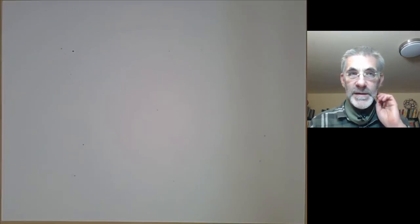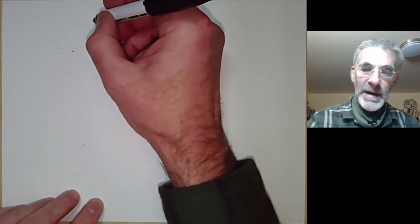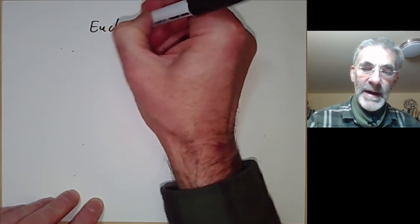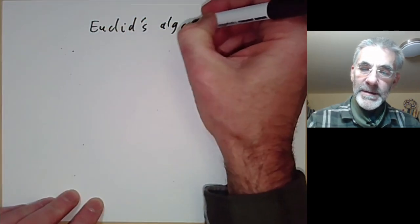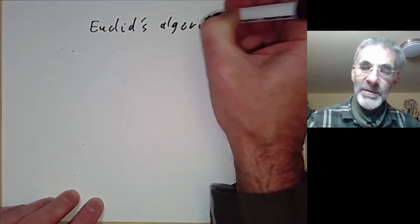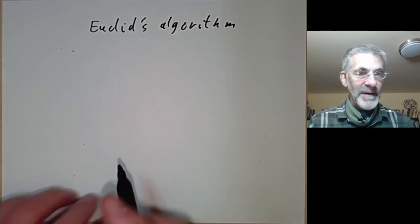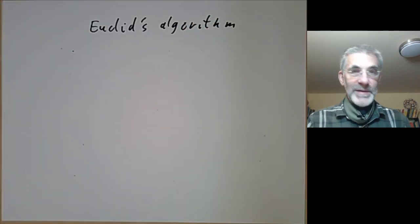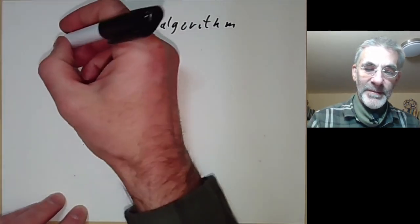This lecture is part of an online number theory course and will be about Euclid's algorithm. Euclid's algorithm tells you how to find the greatest common divisor of two numbers, so I'll start by quickly reviewing that.